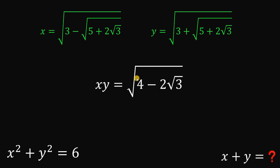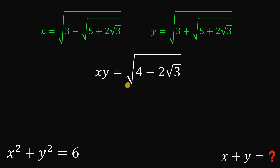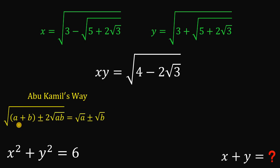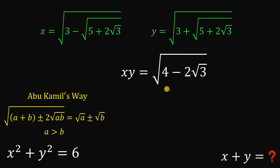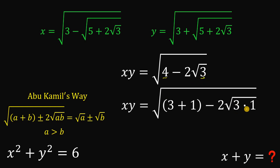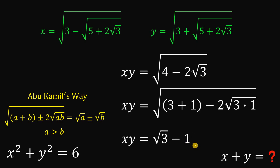Let's simplify this using a shortcut called the Abu-Kamil sway. In the Abu-Kamil sway, if we have the format square root of a plus b plus or minus 2 times square root of ab, this is equivalent to square root of a plus or minus square root of b, provided that a is greater than b. We will use this concept to simplify xy, because 4 can be rewritten as 3 plus 1, and 2 times square root of 3 can be written as 2 times square root of 3 times 1. This is now in the form of the Abu-Kamil sway, so we simplify as square root of 3 minus square root of 1, which equals square root of 3 minus 1. That is the value of x times y.